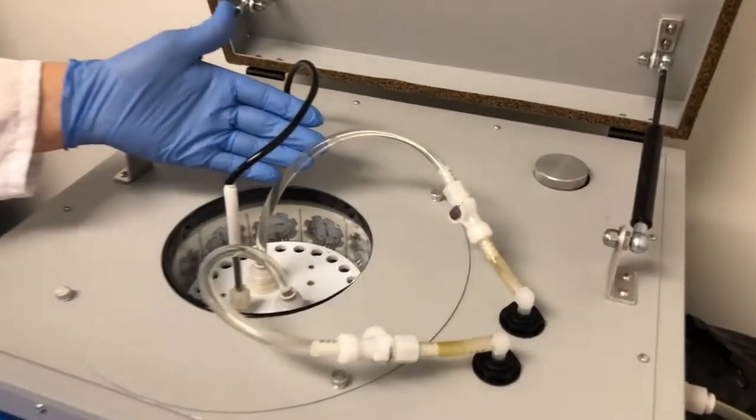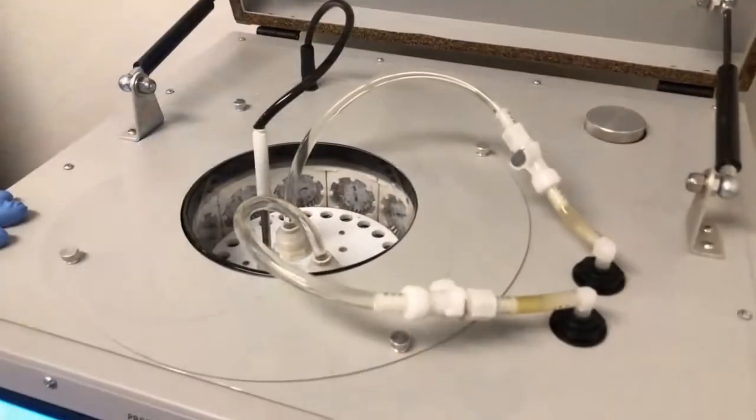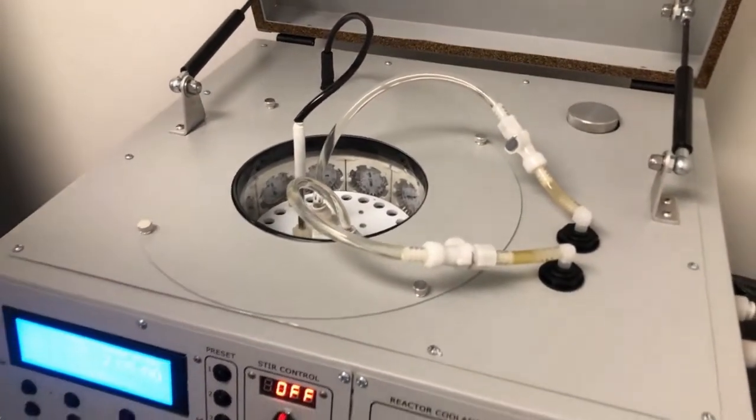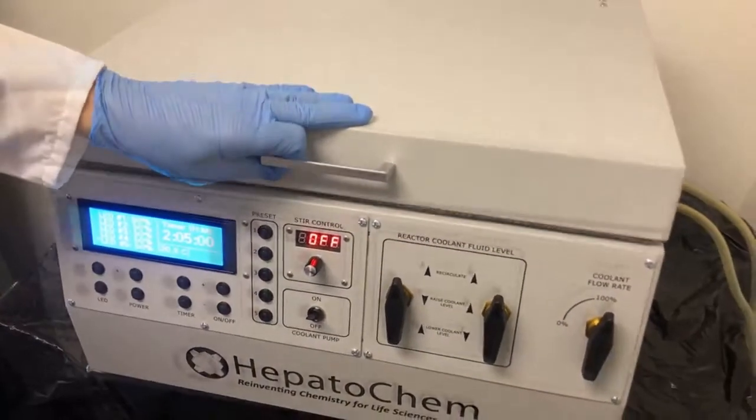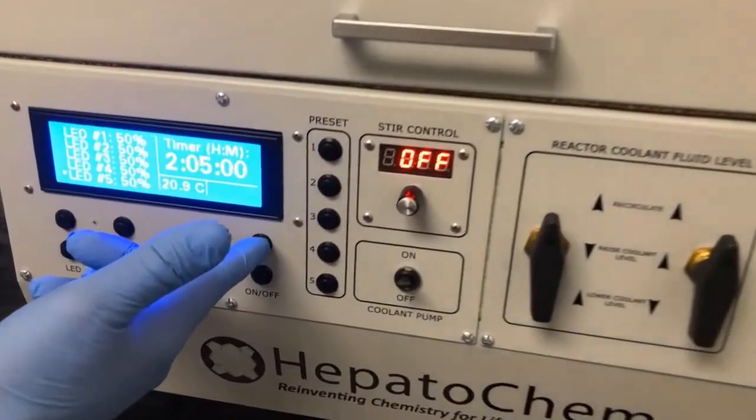As you turn on the pump, water will start to circulate. At this point, simply close the Lucent 360 and start the timer for the reaction. Then turn on the light modules and everything has started.